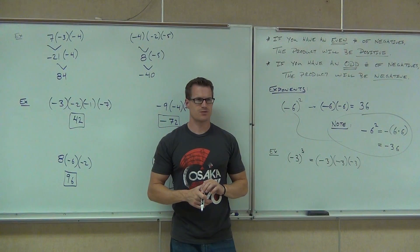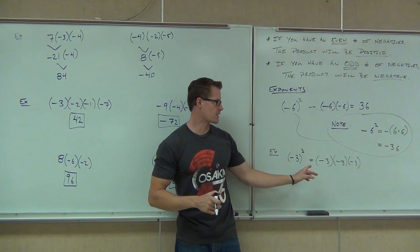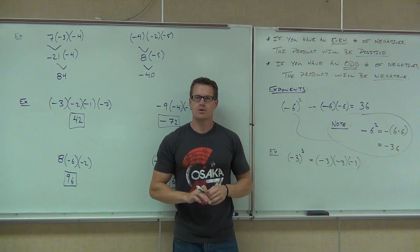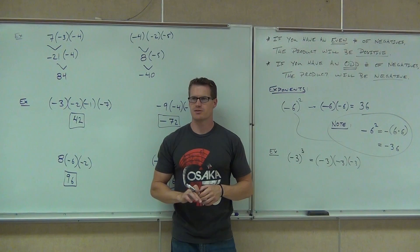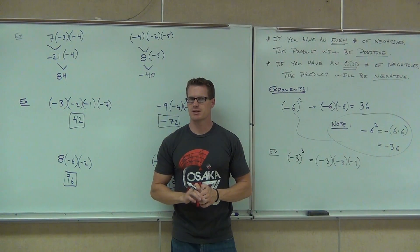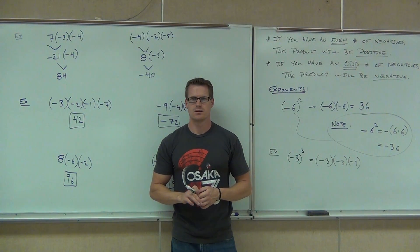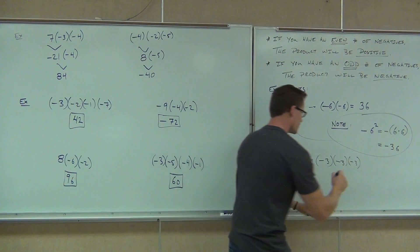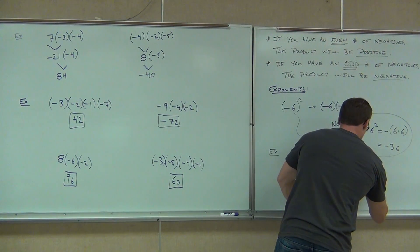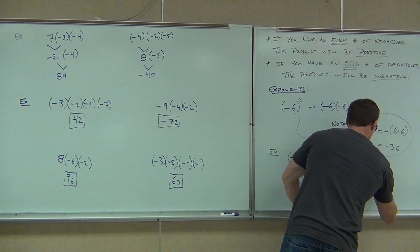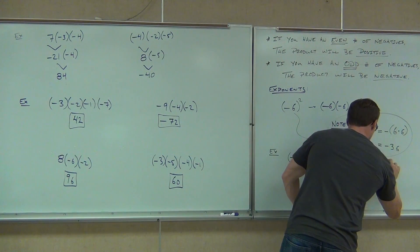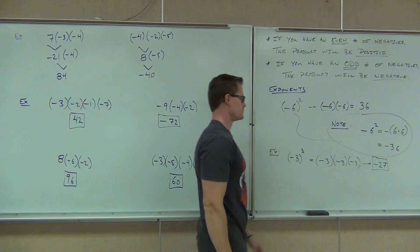Do you see the difference between something like this and something like that? What's our answer here? Negative 3 times negative 3 times negative 3 — negative 27. We have three negatives, and that's going to give us a negative. Negative 27.